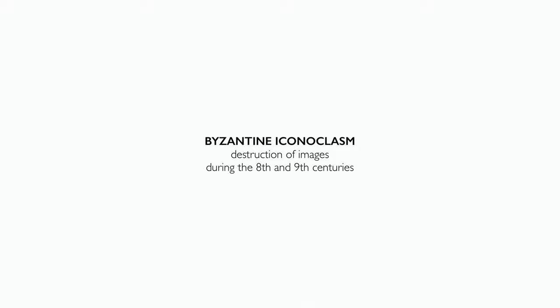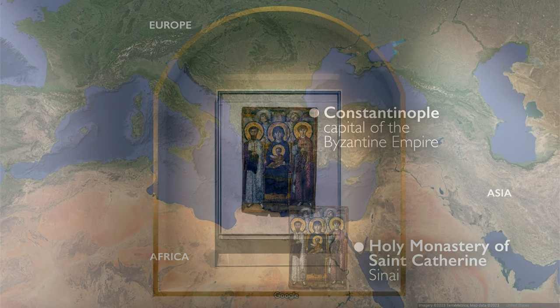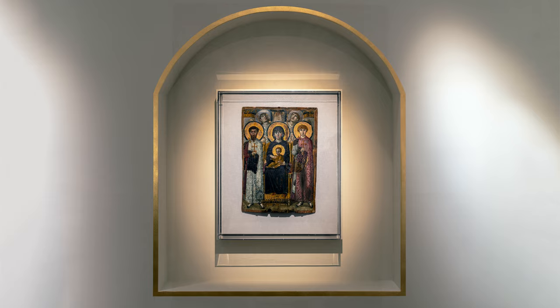Most used icons were destroyed during a period we call the Byzantine iconoclasm, when huge numbers of images were destroyed in a controversy around the appropriateness of images in religious worship. The reason this icon survives is because it's held in a monastery of St. Catharines in the Sinai Peninsula, quite far from the capital of Byzantium.